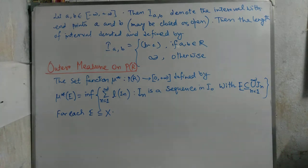Then mu star is a sigma additive measure. Obviously, we know that mu star is a measure, and we need to prove it. We know that mu star is a measure, and we proved in previous lectures that mu star is an outer measure.